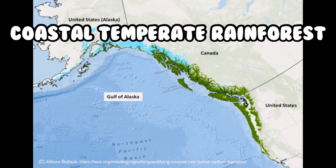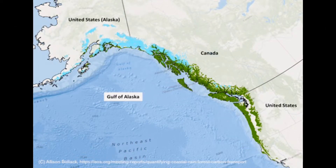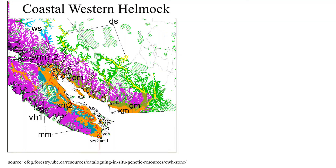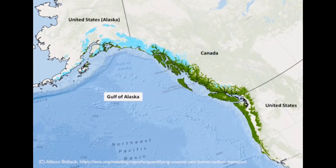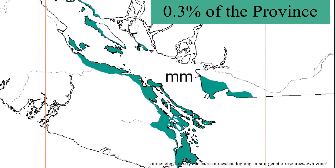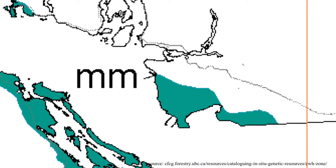The Coastal Temperate Rainforest extends from sea level to approximately 150 kilometers inland to the base of the coastal mountains. Lower Mainland BC consists of two biogeoclimatic zones: the Coastal Western Hemlock Zone and the Coastal Douglas Fir Zone. Both zones are greatly influenced by the Pacific Ocean, but the Coastal Douglas Fir Zone is very small, covering only about 0.3% of the province and restricted to low elevation areas.